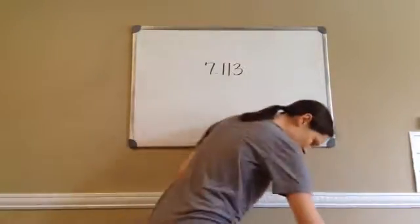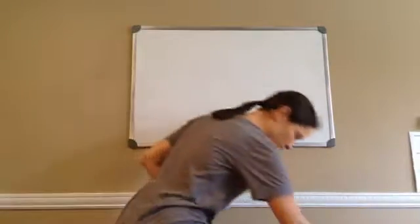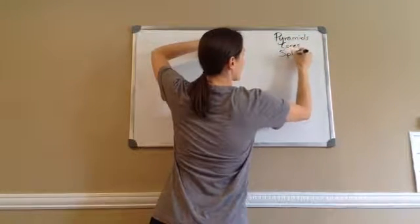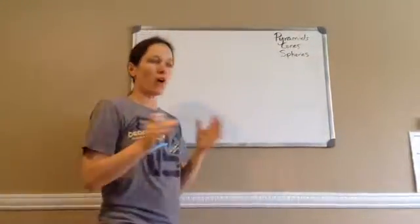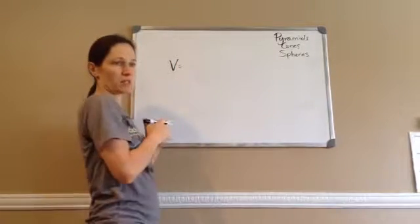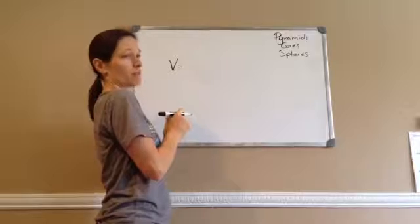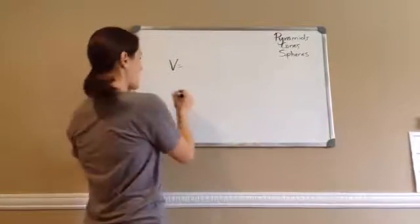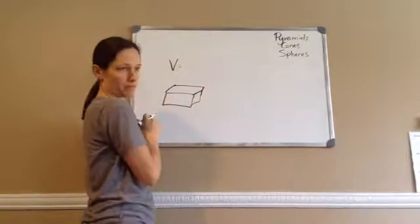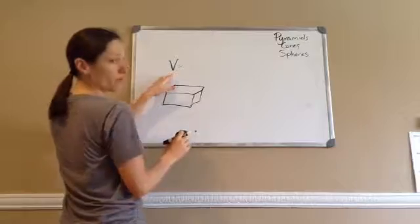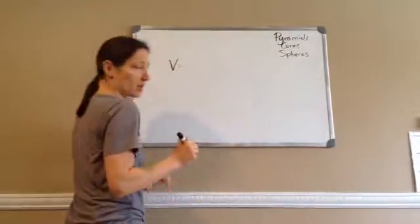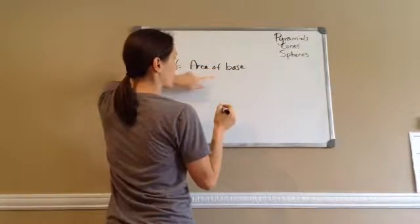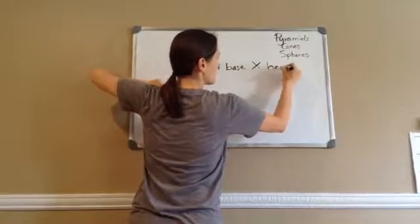All right, 7th grade, lesson 113. This one is on volume of pyramids, cones, and spheres. You've learned what volume is so far. Volume is the area of the base — whether the base is a triangle, a circle, or whatever — times the height. That's actually an easier formula that applies to every single shape.